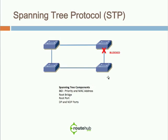During the spanning tree operation, the first thing chosen is a root bridge. The root bridge determines which single switch will be the root of the spanning tree network, and this happens per VLAN.